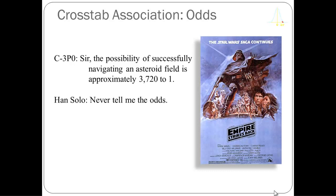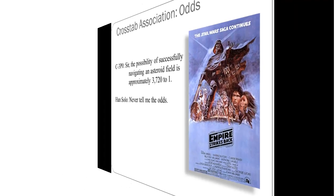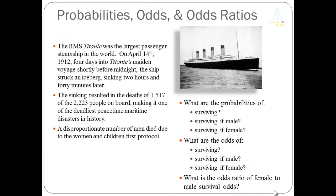A lot of statistics professors use the example of the Titanic sinking. There's great information on who died, whether they're male or female, their class, country of origin, and so forth, making it useful for different statistical applications. The Titanic sank in 1912; there were approximately 2,223 people on board, of whom approximately 1,517 died. There is some dispute about the exact numbers, but these are solid estimates.